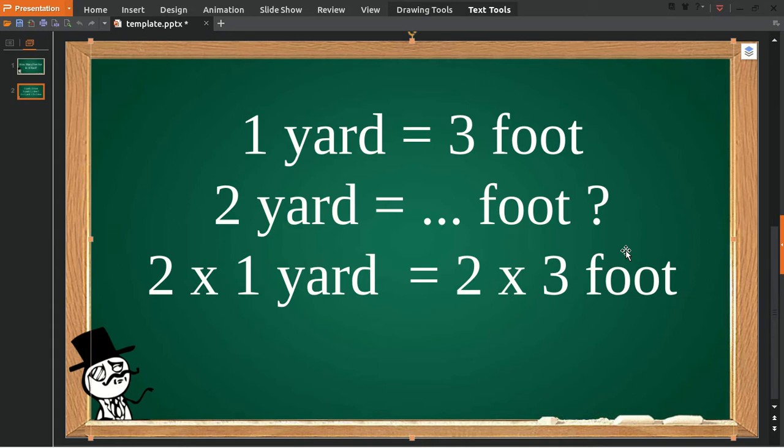So 2 multiplied by 1 equals 2 yards, and then 2 yards equals 2 multiplied by 3, which is 6 feet.